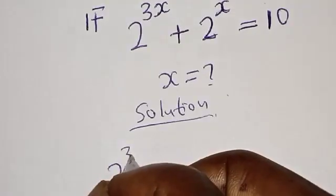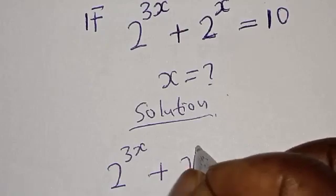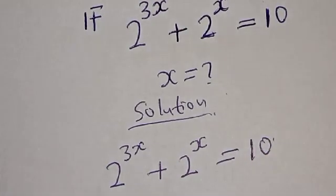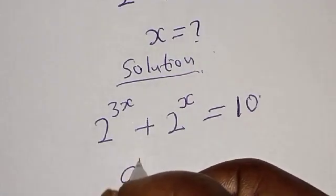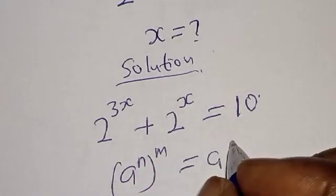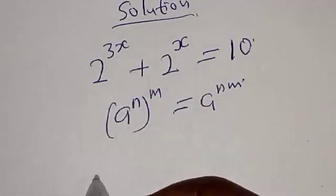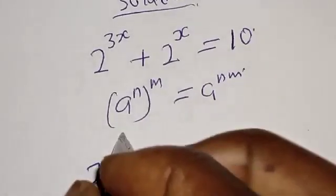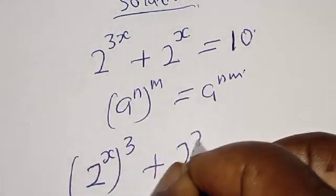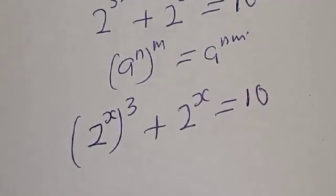We have the given equation: 2 raised to power 3x plus 2 raised to power s is equal to 10. Remember that if you have a raised to power n, raised to power m, that is the same as a raised to power n times m. Then we have this become 2 raised to power s, raised to power 3x, plus 2 raised to power s, is equal to 10.